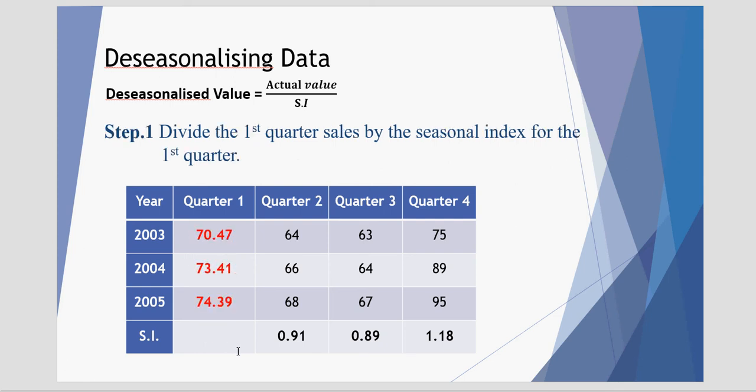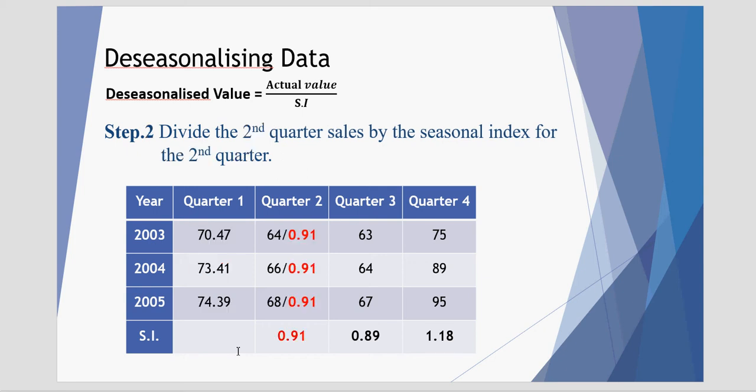This deseasonalizes, or takes away, the seasonality from our data. Quarter 2, we divide each one of quarter 2 from 2003, 4, and 5 by the seasonal index of quarter 2, 0.91. That gives us the following values.